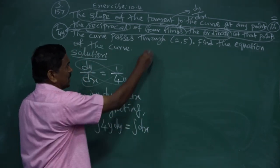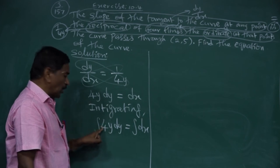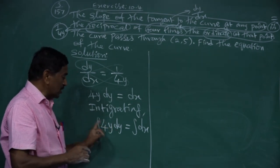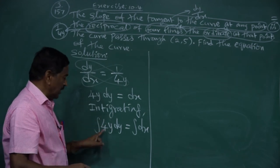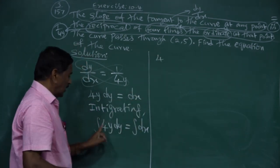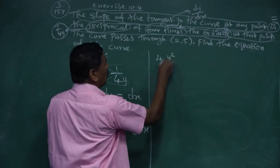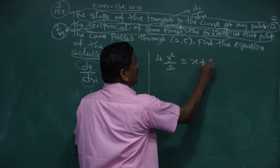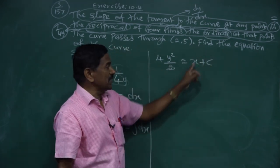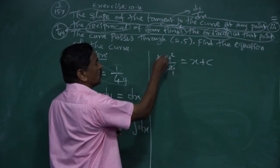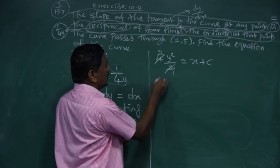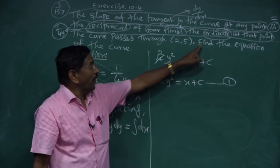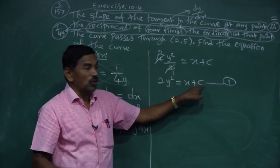This comes under variables separable. Cross multiplying: 4y·dy = dx. Integrating both sides: ∫4y dy = ∫dx, giving 4·(y²/2) = x + C, which simplifies to 2y² = x + C. Let this be the first equation.